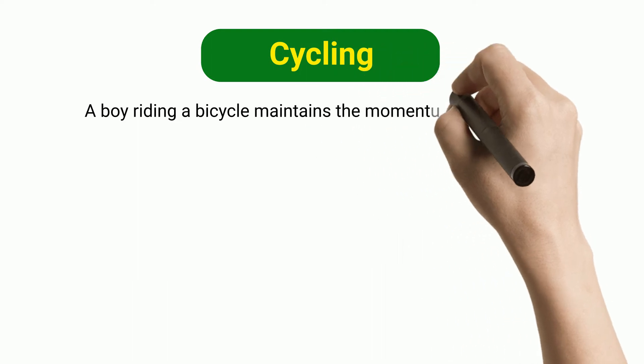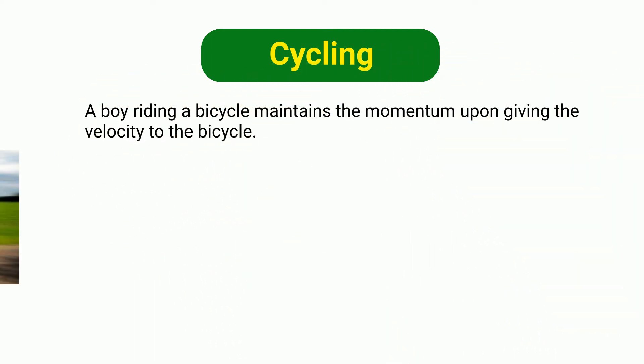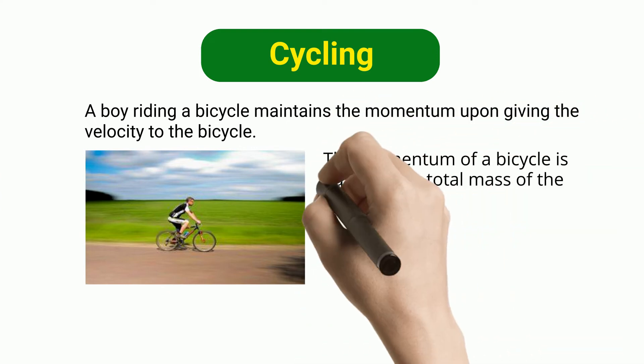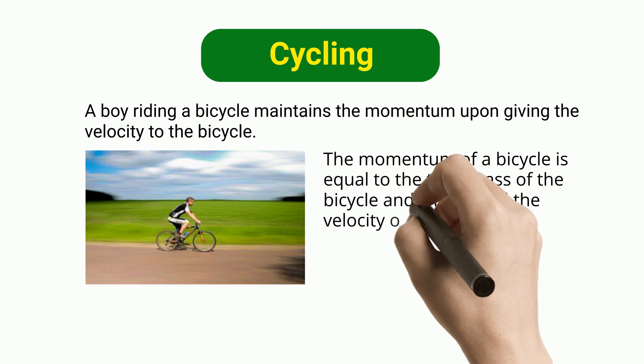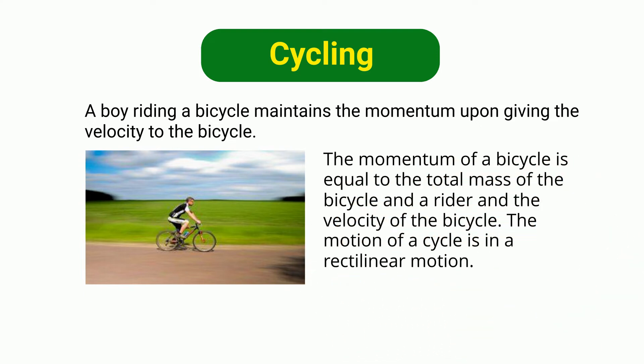Cycling: A boy riding a bicycle maintains the momentum upon giving the velocity to the bicycle. The momentum of a bicycle is equal to the total mass of the bicycle and the rider and the velocity of the bicycle. The motion of a cycle is in a rectilinear motion.